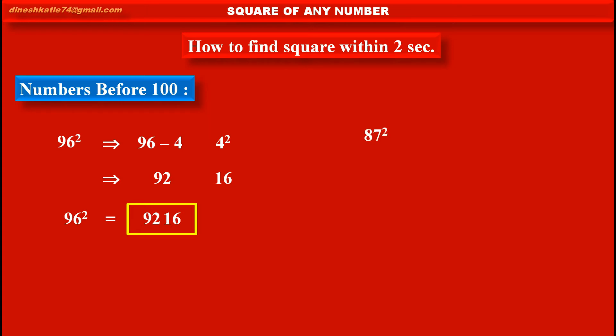Now, see second example. Here, we have to find square of 87. Now, the difference between 87 and 100 is 13. So, in first part, we have to write 87 minus 13. And second part is square of same difference, that is square of 13.